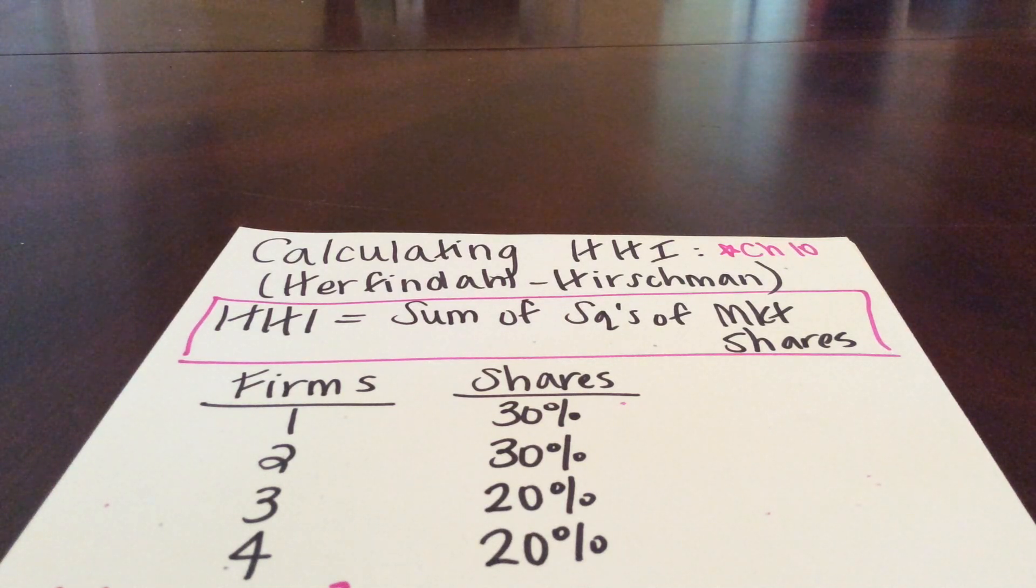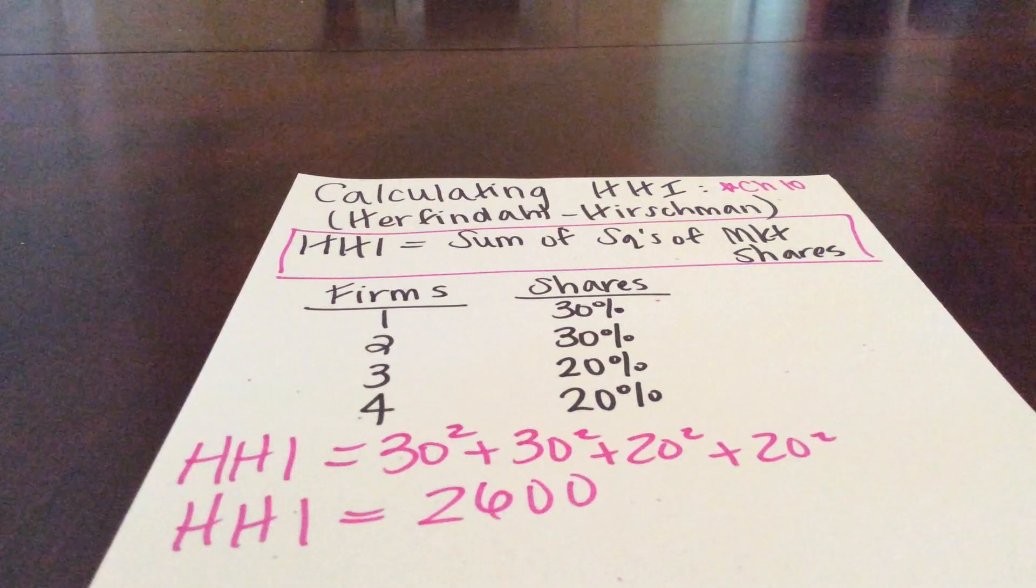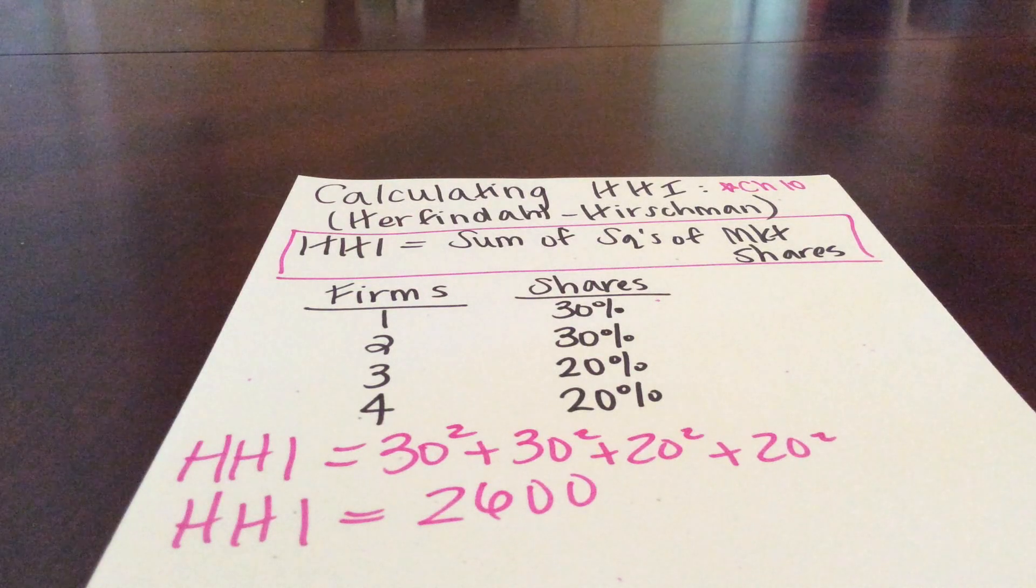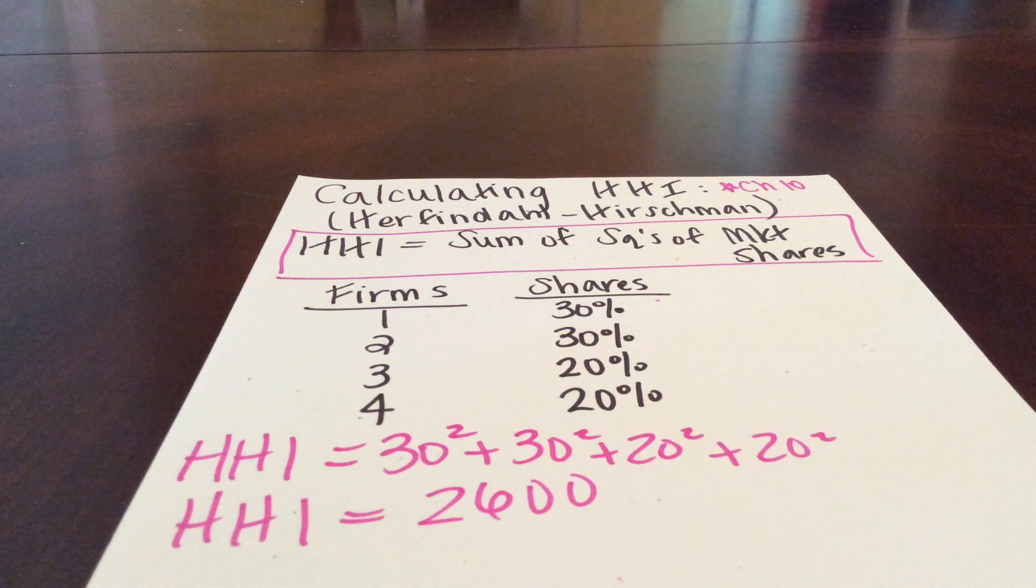In this example, there are four firms. Firm 1 has 30% of the shares, as does firm 2. Firms 3 and 4 each have 20% of the market shares. We'll set up our equation. The HHI is 30 squared plus 30 squared plus 20 squared plus 20 squared, so it would be 2,600.